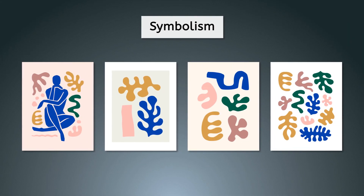Symbolism. Organic shapes can be used as symbols in art. For example, a leaf shape can symbolize growth and renewal, or the shape of the human body could reference strength or balance.